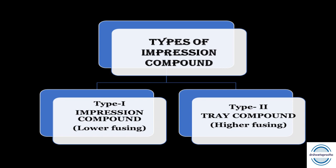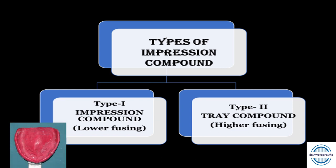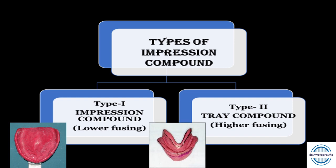Classification of impression compound: Type 1 is the impression compound used for making impressions — it is a low fusing compound. Type 2 is the tray compound, used to prepare trays for making impressions. The Type 2 tray compound is stiffer and has less flow compared to Type 1. To remember: T for 2, T for tray.